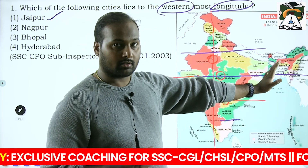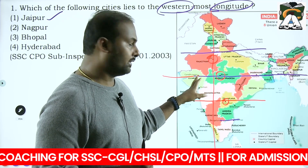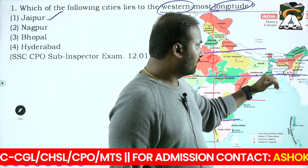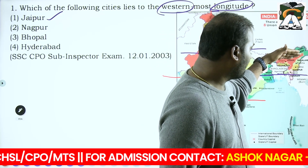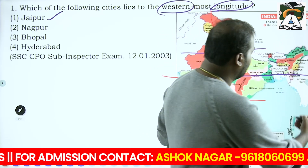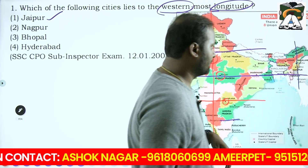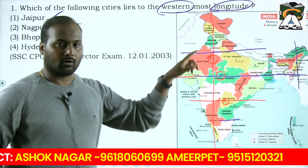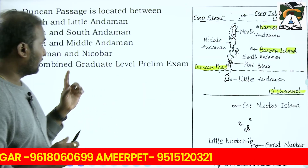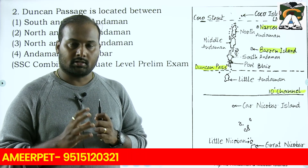Be more careful with the cities present in the extreme east as well. Don't get confused between Arunachal Pradesh, Nagaland, Manipur and Mizoram. The extreme east will have the main state capitals like Kohima. Try to remember that longitude as well.